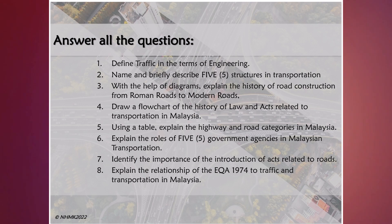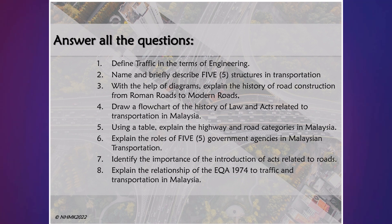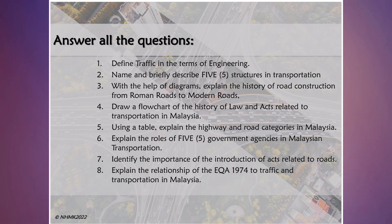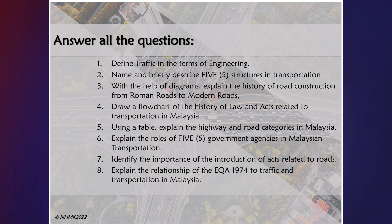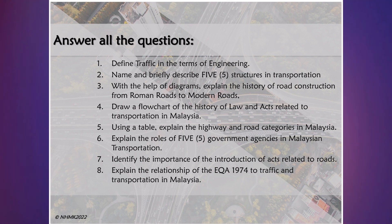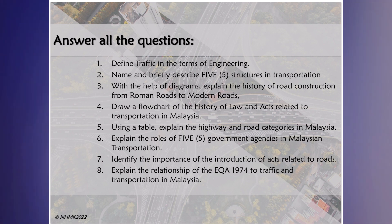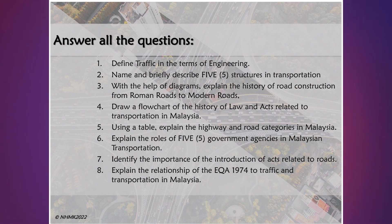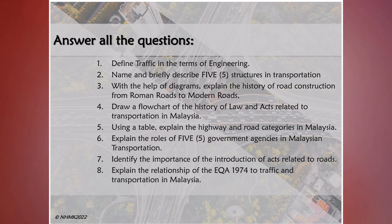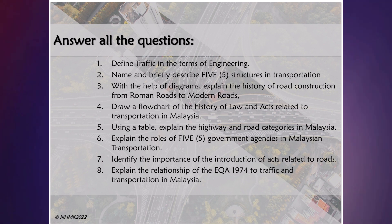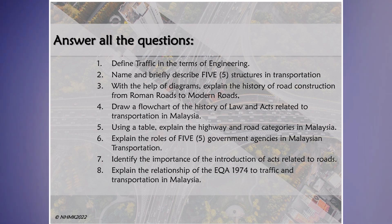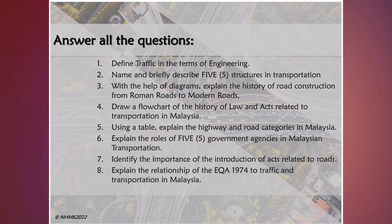Now try to answer all these questions. One: define traffic in terms of engineering. Two: name and briefly describe five structures in transportation. Three: with the help of diagrams, explain the history of road construction from Roman roads to modern roads. Four: draw a flowchart of the history of law and acts related to transportation in Malaysia. Five: using a table, explain the highway and road categories in Malaysia. Six: explain the roles of five government agencies in Malaysian transportation. Seven: identify the importance of the introduction of acts related to roads. Eight: explain the relationship of the EQA 1974 to traffic and transportation in Malaysia.